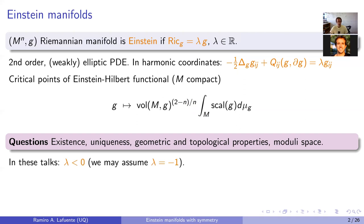Let me mention that in this talk, the Einstein constant lambda will be assumed to be negative. Of course the other cases — the Ricci-flat case lambda = 0 and lambda positive — are extremely important as well, but for simplicity I will assume throughout that lambda equals minus one.